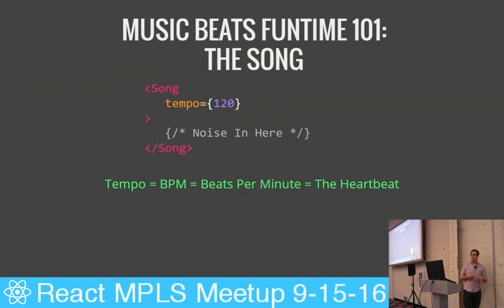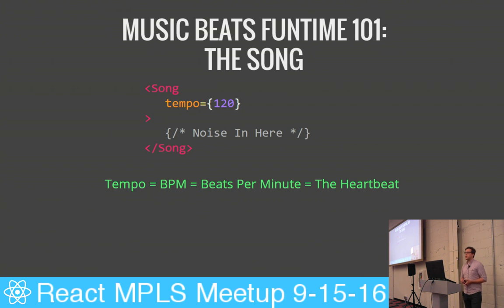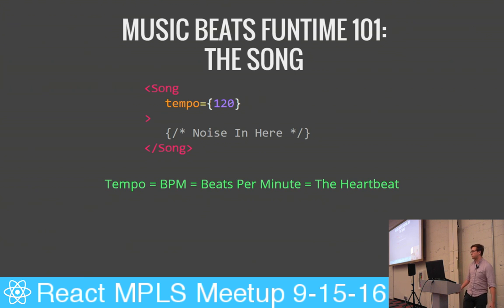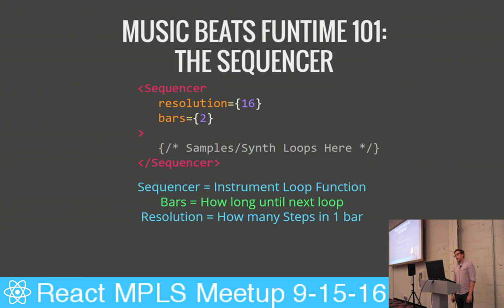So with that in mind, let's get into the components and the API of React Music. The main top-level component for React Music is the Song component, and it takes one required prop — the tempo prop. Tempo is basically the beats per minute; it's the heartbeat of a song. It's whenever you're nodding your head to a beat or tapping your foot — that's basically the tempo. This defines how fast or how slow your song is. Generally, most songs are between 80 and 120 BPM.